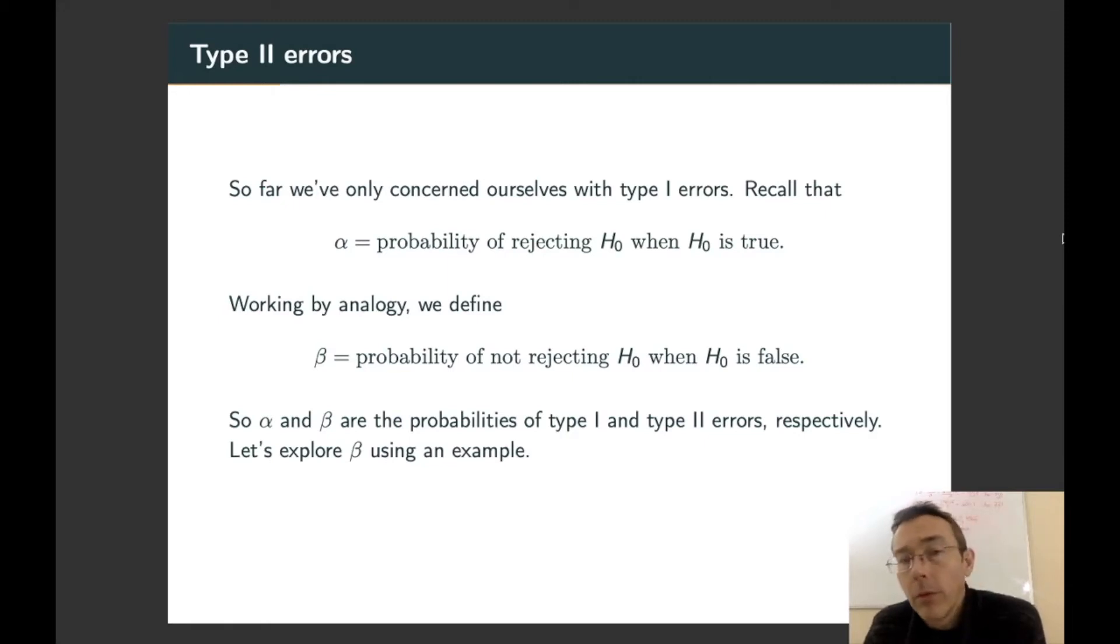Up till now, we've talked a bunch about alpha, the probability of rejecting H0 when H0 is true. In other words, the probability of a type 1 error. Of course, if we know a p-value, then we can be even a bit more specific with that probability. Fundamentally, this is the right way to understand alpha.